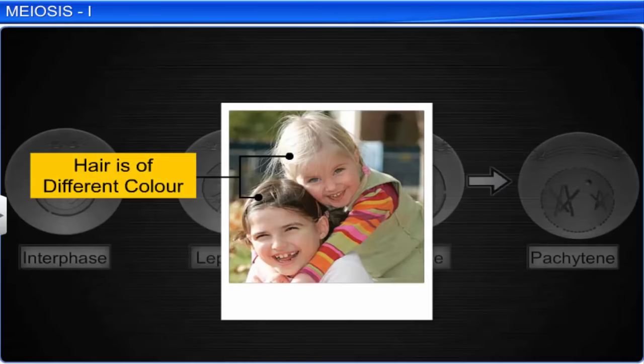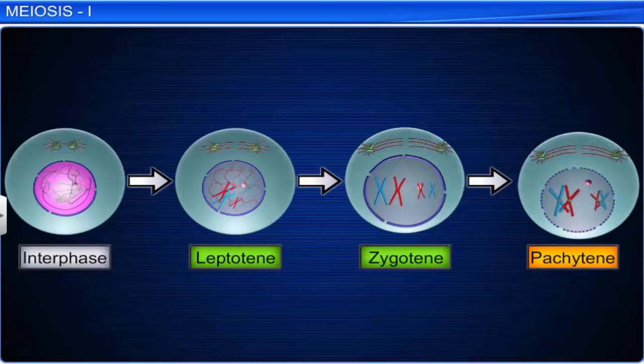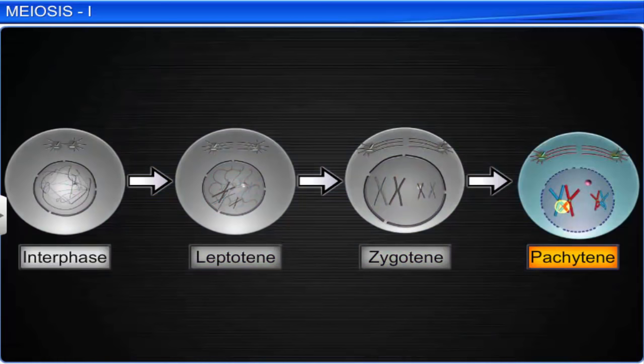Crossing over is very significant during the formation of gametes, as it results in new combinations of genes, leading to genetic variation in the offspring. By the end of the pachytene stage, recombination between homologous chromosomes is complete, and the chromosomes are linked at the sites of crossing over.